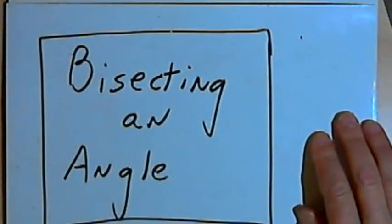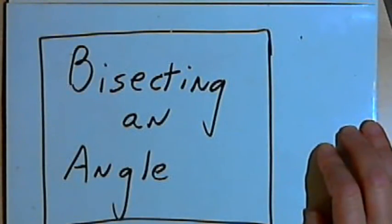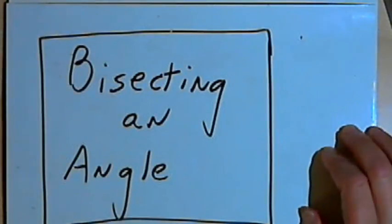This video is provided as supplementary material for courses taught at Howard Community College. In this video I'm going to demonstrate how to bisect an angle using a straight edge and a compass.